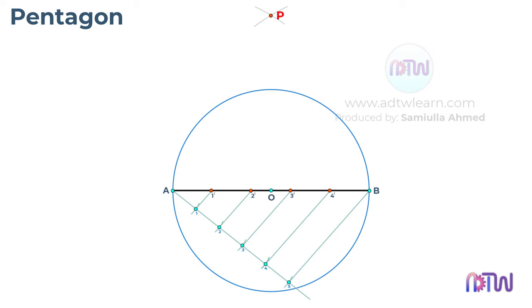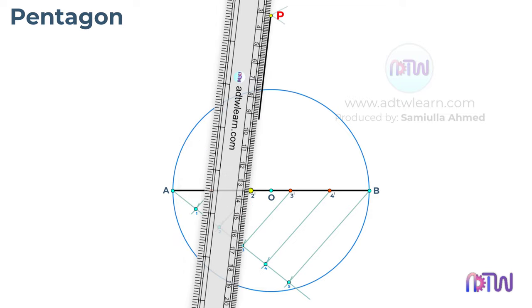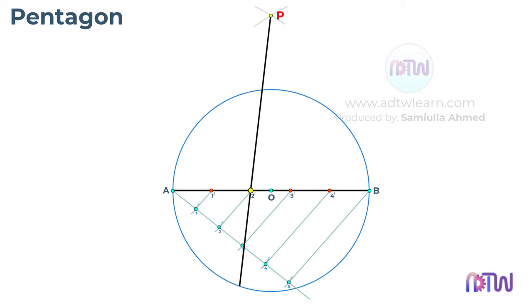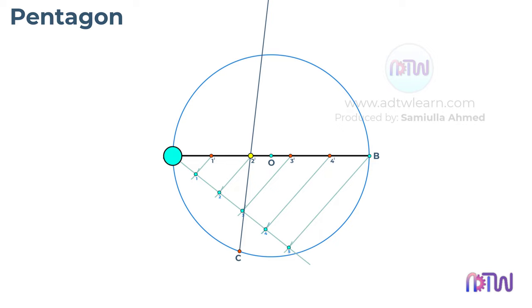Next, draw a line passing through this point P and point 2 dash, such that it touches the circumference of the circle. This point will be our point C. The distance between point A and point C is the side length of a pentagon, which will exactly fit into this circle.